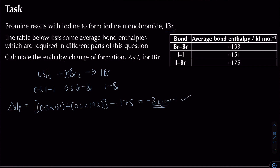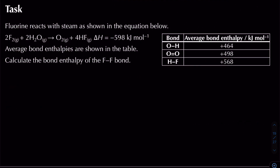This next question is more difficult — we're given the enthalpy change and working backwards to find the bond enthalpy of the F–F bond. Fluorine reacts with steam; the enthalpy change is −598 kJ/mol and other average bond enthalpies are provided in a table. We set up: −598 = reactants − products, using x for the unknown F–F bond enthalpy.